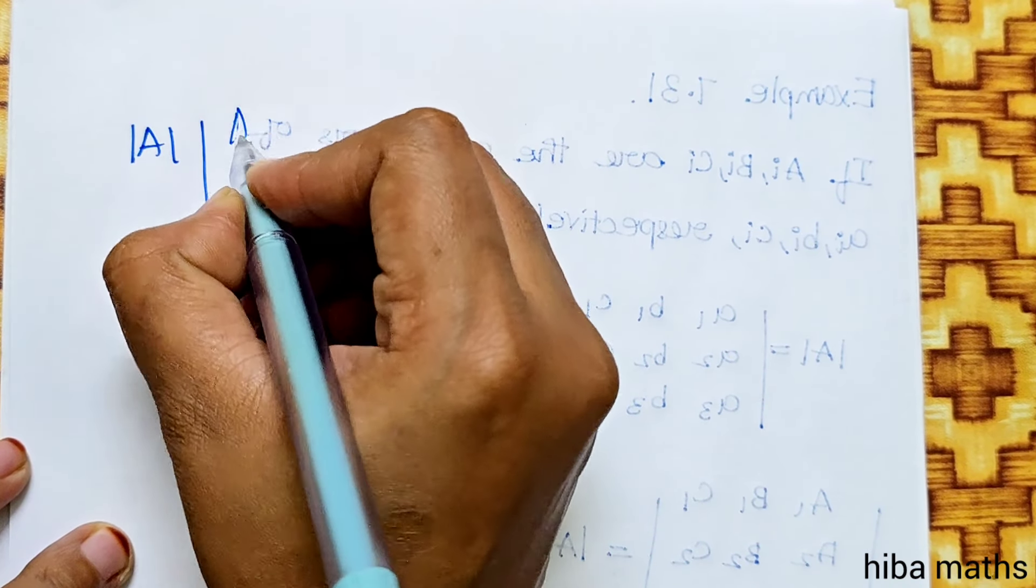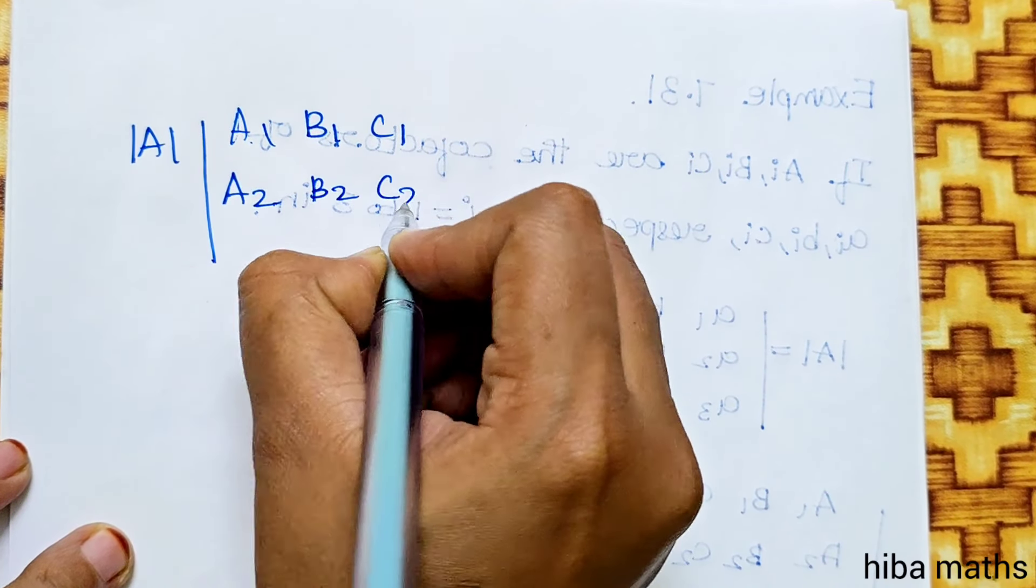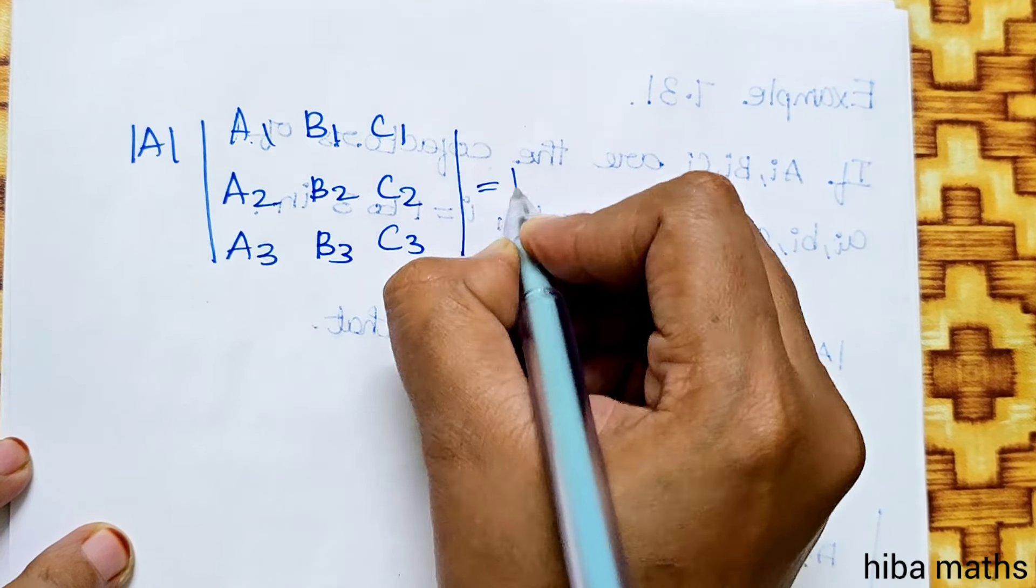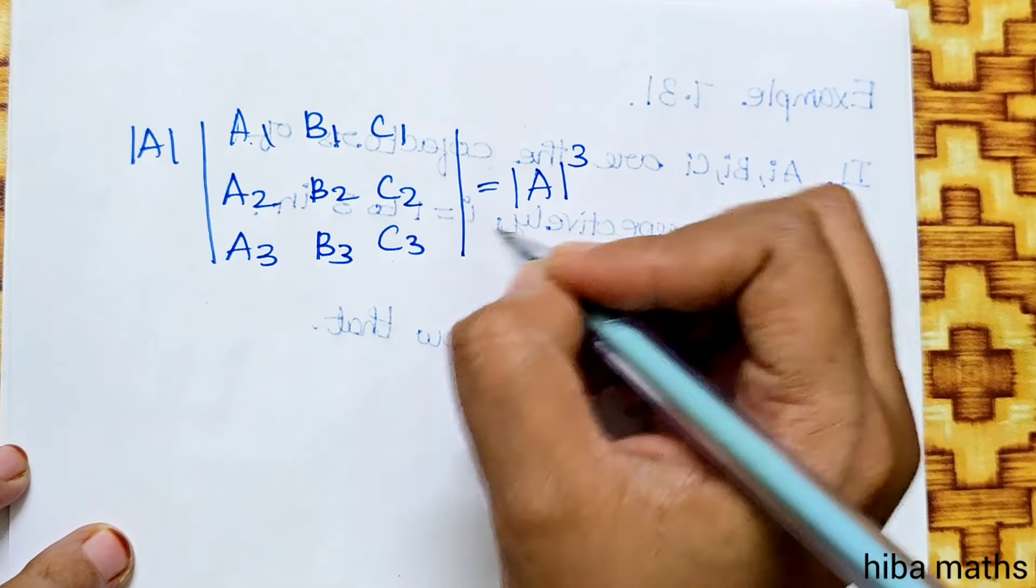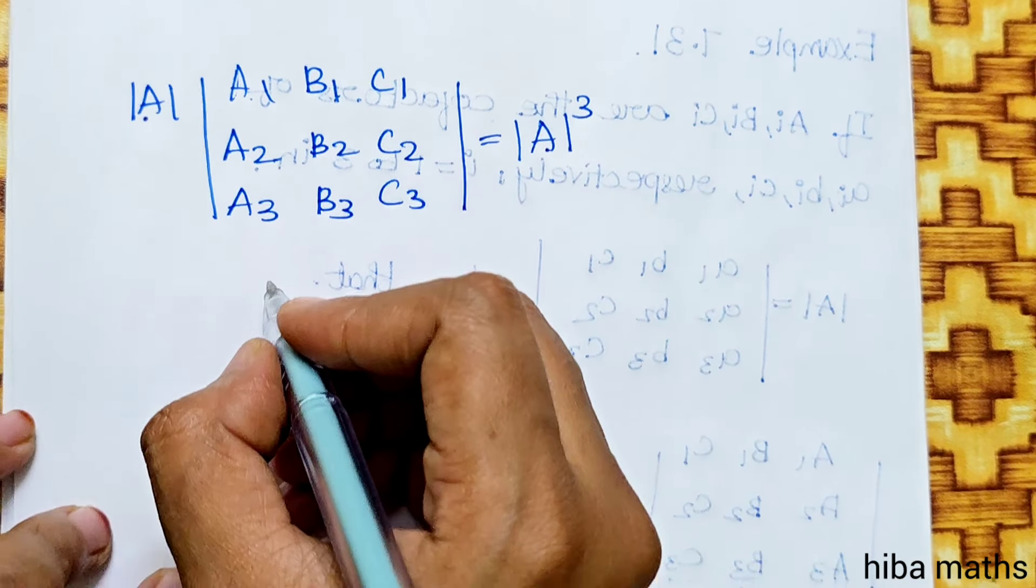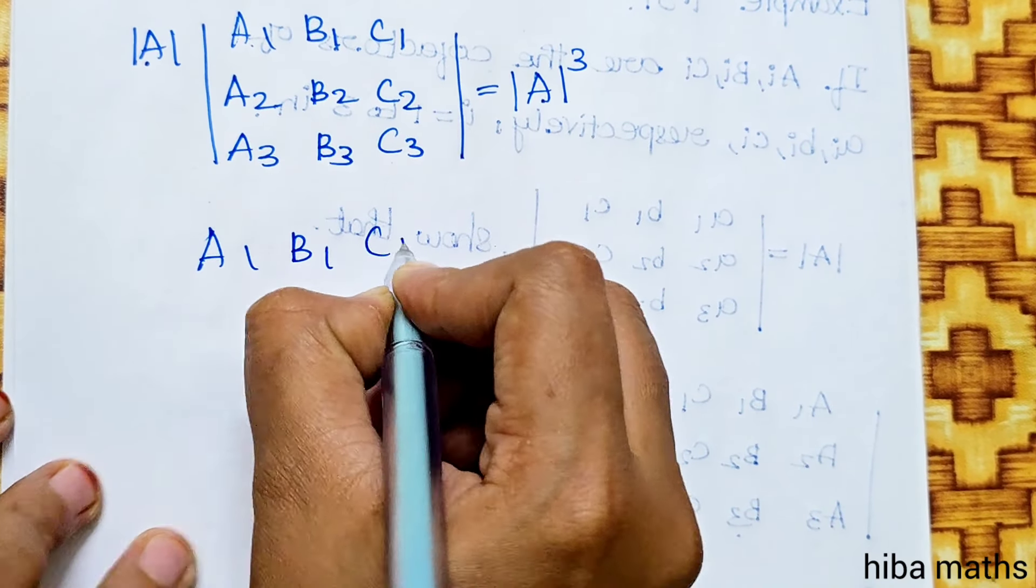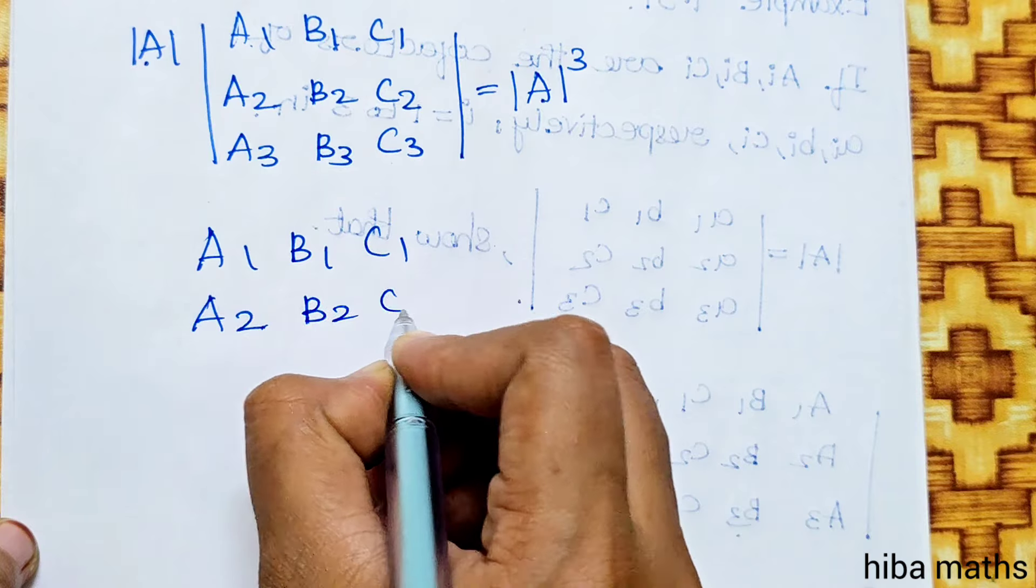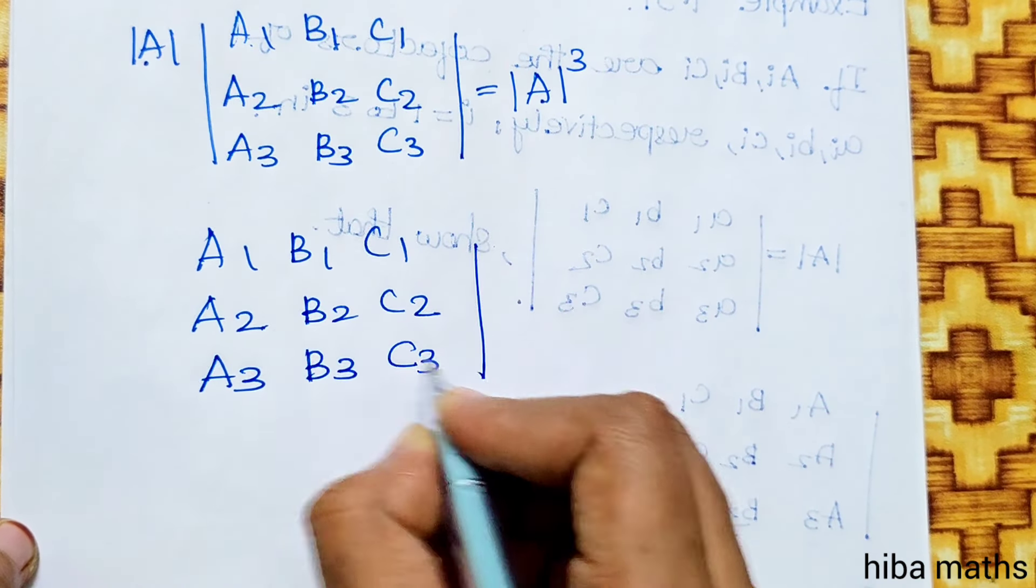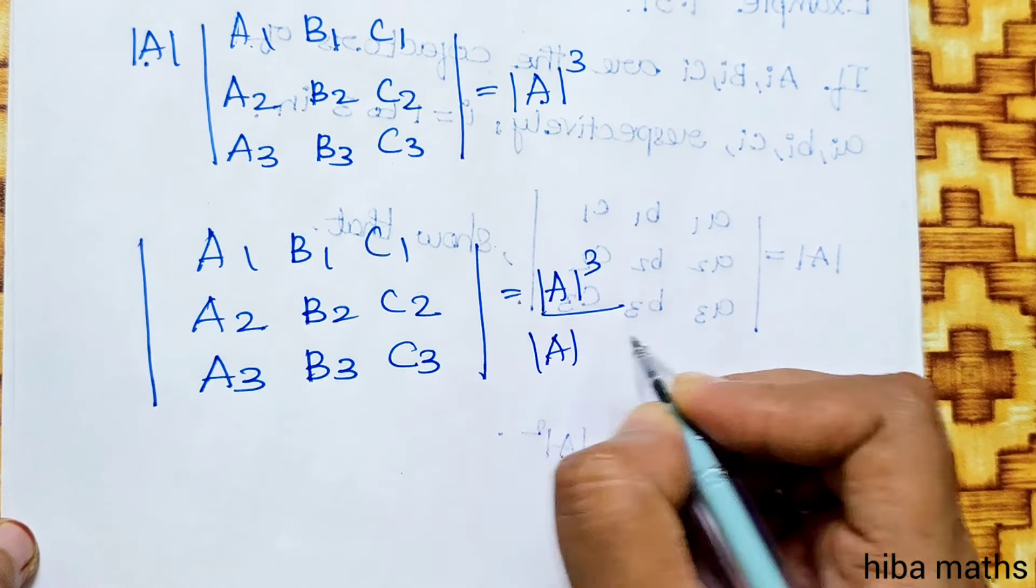We are going to multiply by the identity properties. Modulus of A times the determinant of A1 B1 C1, A2 B2 C2, A3 B3 C3 equals modulus of A cubed. This is the product rule. If modulus of A cubed equals the product,